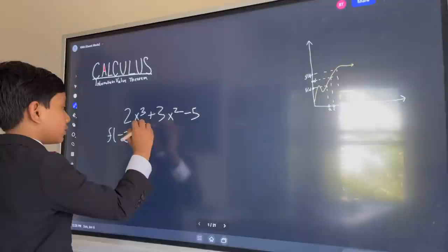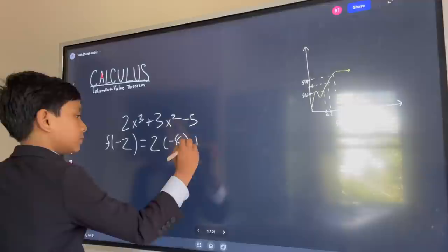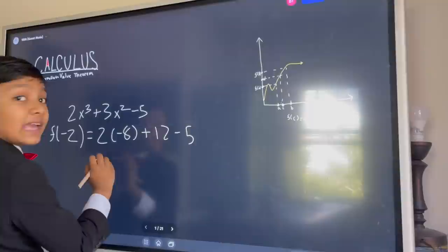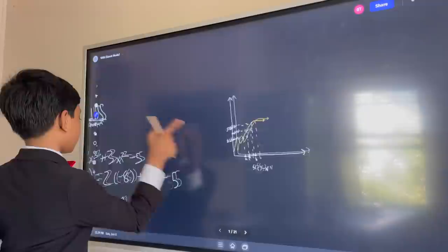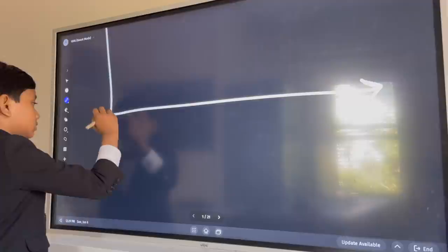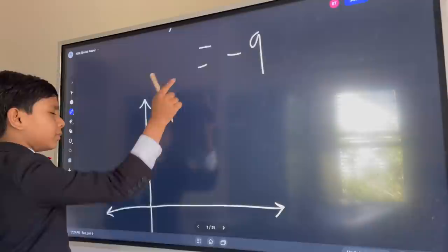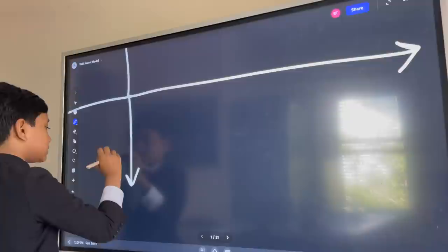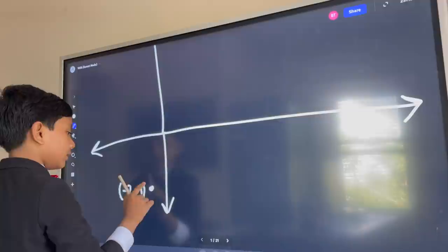So we plug in -2. 2 times -2 cubed, so that's -8, and then plus 12 minus 5. Let's just do this quick. Okay, so -9. Now what we're gonna do is we're gonna put that on a graph. Let's just draw the negative axis. So -9. Let's say that it's -2, -9. We'll go down here -2, -9, and then this is 0, 0.